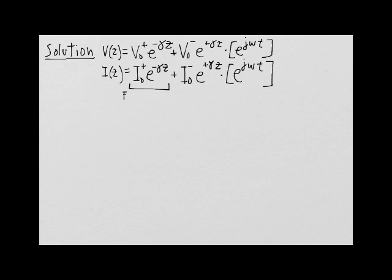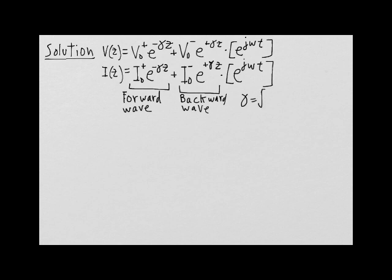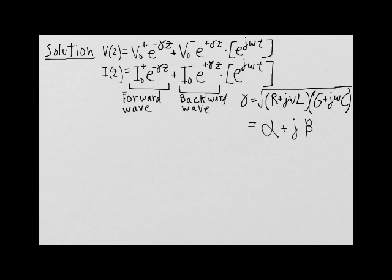The solution consists of a forward wave and a backward wave. Previously we defined gamma to be equal to the square root of (r + j omega L) times (g + j omega C). This is of course a complex number, and we further define the real part to be equal to alpha and the imaginary part to be equal to beta.